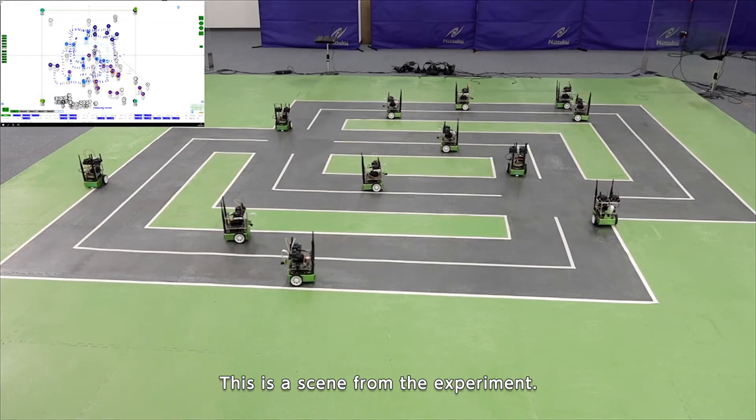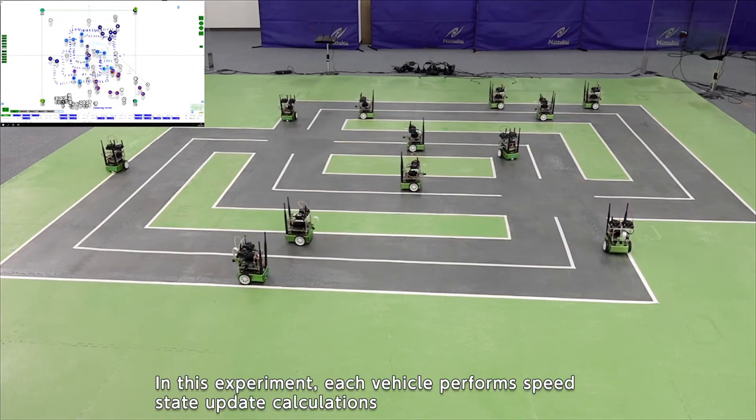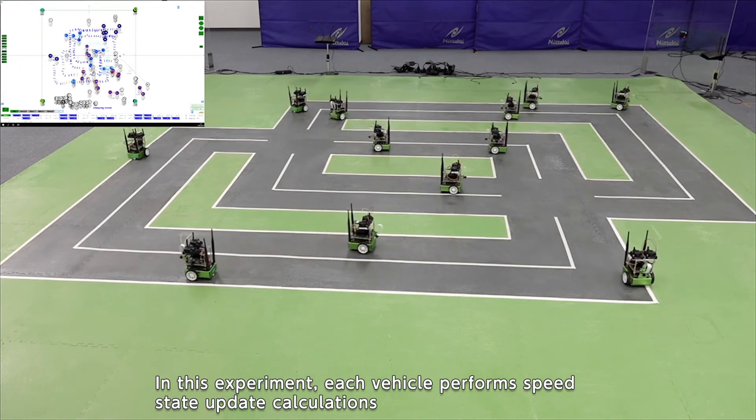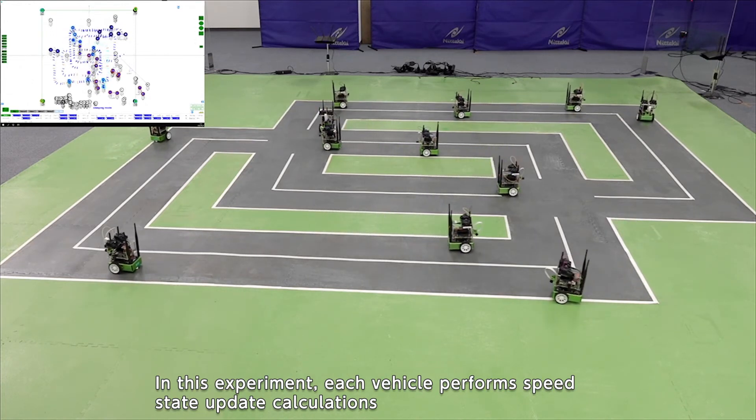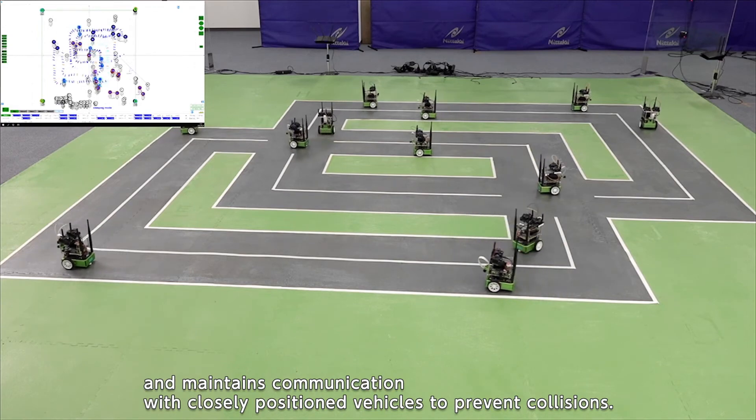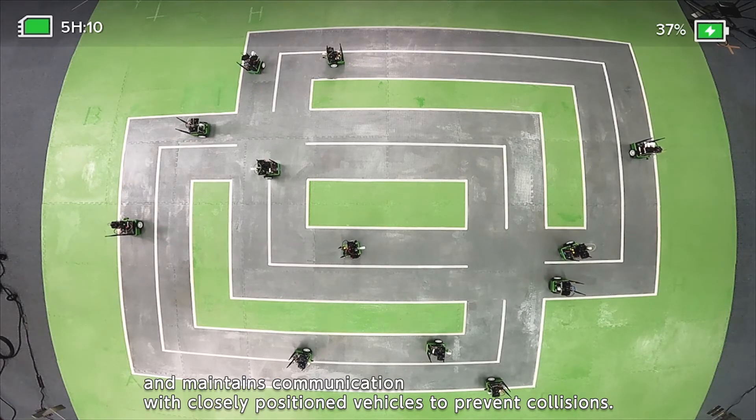This is a scene from the experiment. In this experiment, each vehicle performs speed state update calculations and maintains communication with closely positioned vehicles to prevent collisions.